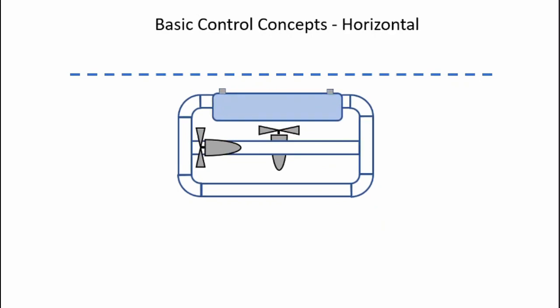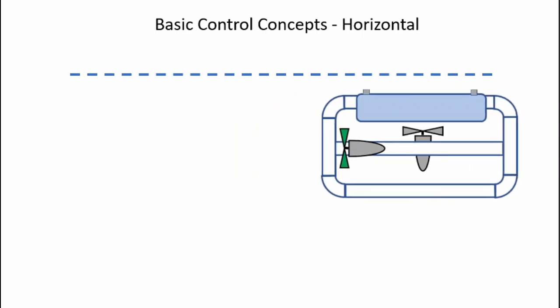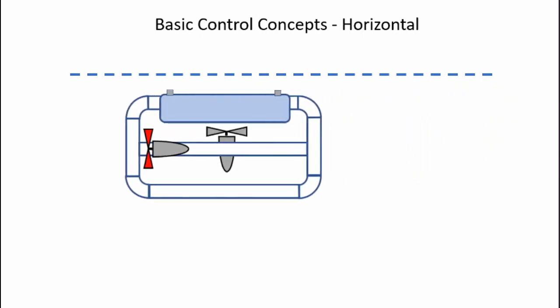I use the forward and reverse thrusters, the thruster on the left, for horizontal motion. I activate the motor, shown here with the green propeller, and it'll push the ROV forward. If I stop the motor, it'll stop in place. If I reverse the motor, shown here in red, the ROV will move backwards.